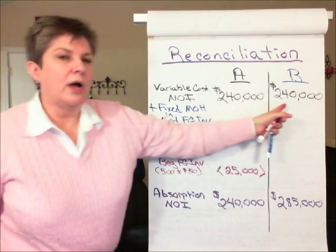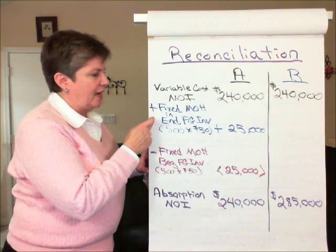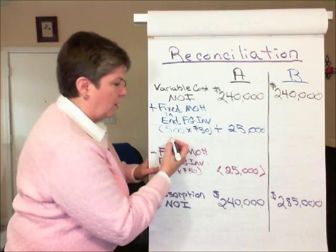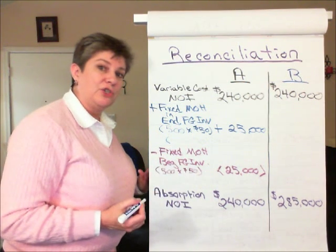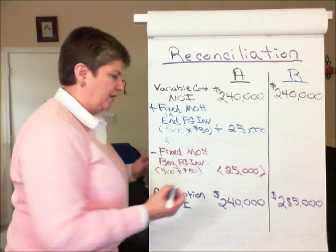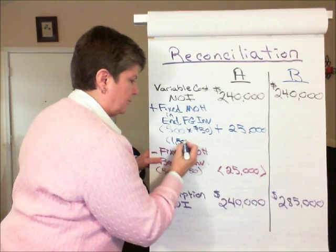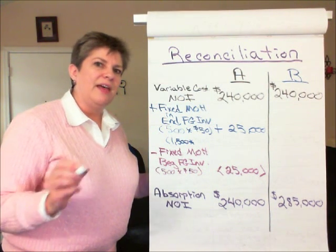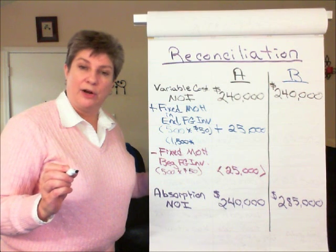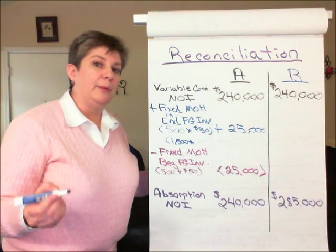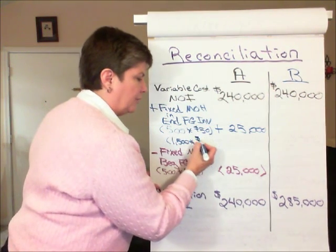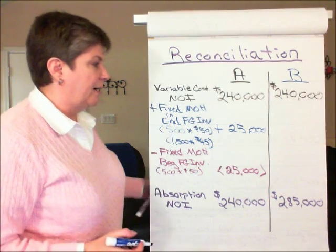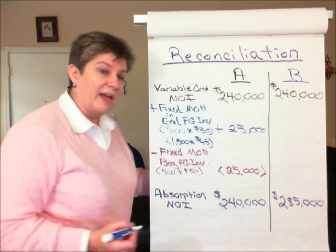We'll start with the variable costing net income of $240,000, and to that we will add the fixed manufacturing overhead in ending finished goods inventory. In Scenario B, ending finished goods inventory was 1,500 units. Since we produced 10,000 units, the $450,000 in fixed overhead was spread over more units, so the fixed overhead per unit was only $45. So 1,500 times $45 is $67,500.